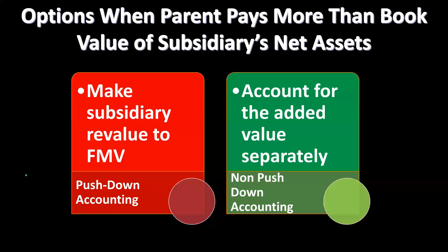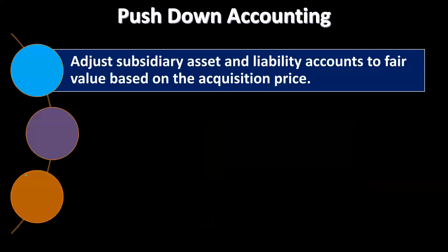With non-push down accounting, the parent records the purchase on its books using the equity method at fair value. The subsidiary continues as it normally would because there has been no real change to its chart of accounts — nothing has been revalued. The subsidiary's books keep moving forward, and adjustments are handled during the consolidation process. Push down accounting adjusts subsidiary asset and liability accounts to fair value based on the acquisition price.